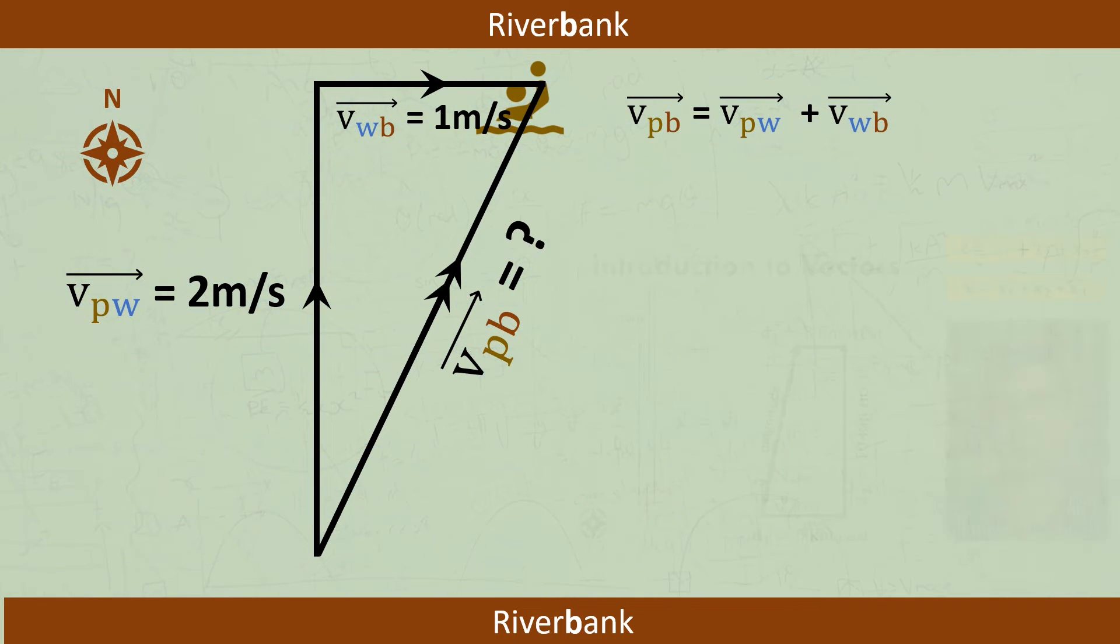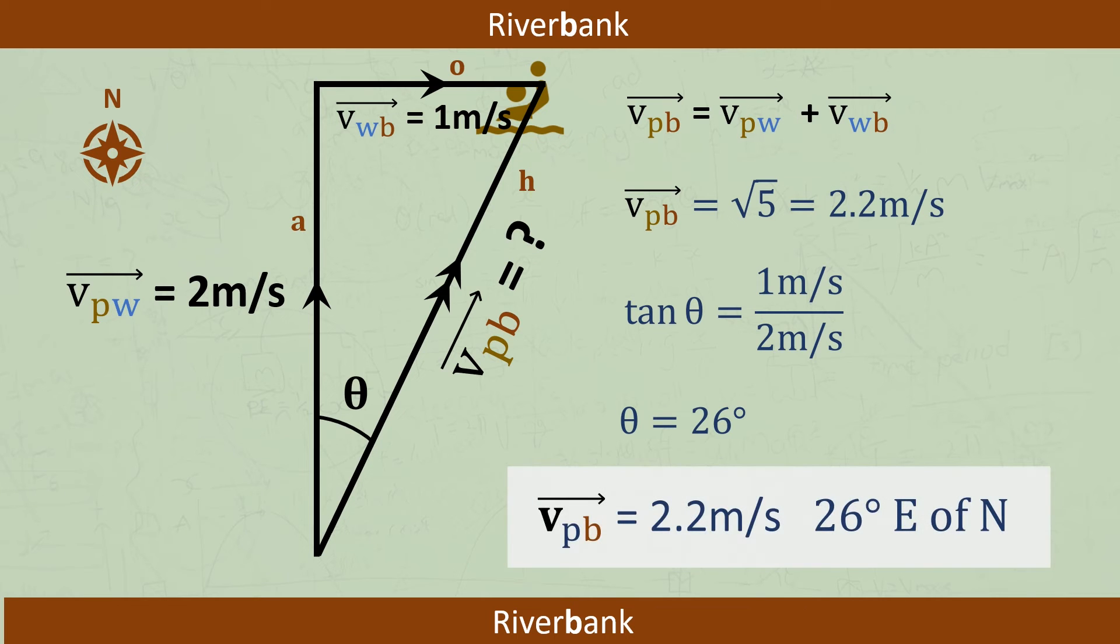We can just use good old Pythagoras theorem to calculate the swimmer's speed relative to the bank. But since velocity is a vector, we also need to state its direction. Here's the opposite, adjacent and hypotenuse. So we can just use tan theta and get 2.2 metres per second, 26 degrees east of north.